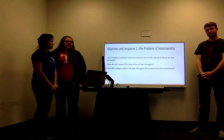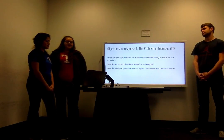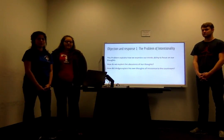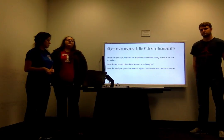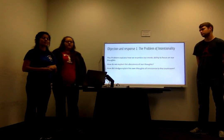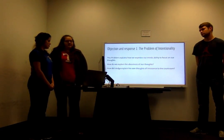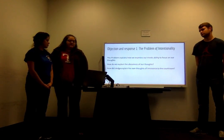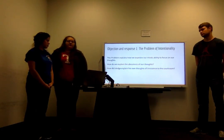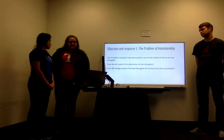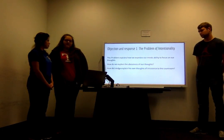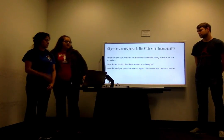Our first objection and response is the problem of intentionality. This problem explains how we examine our mind's ability to focus on our thoughts — how do we explain the 'aboutness' of our thoughts? How did Sledge explain his own thoughts of innocence to the courtroom? He knew he was innocent in his mind, but this objection of intentionality states that maybe he didn't have the ability to focus on those thoughts particularly.